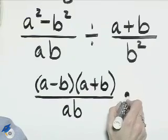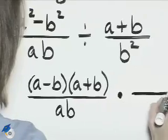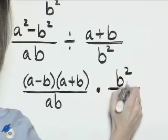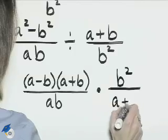Change the division to multiplication and take the reciprocal of the second fraction. So we'll have b squared over a plus b.